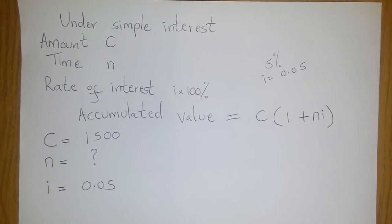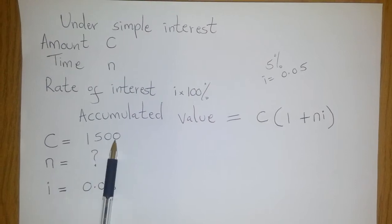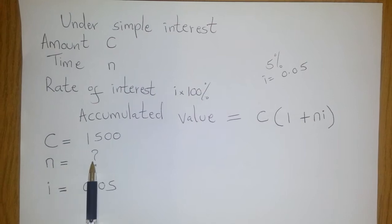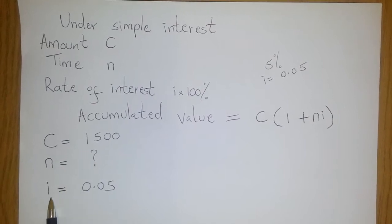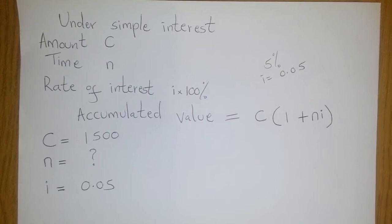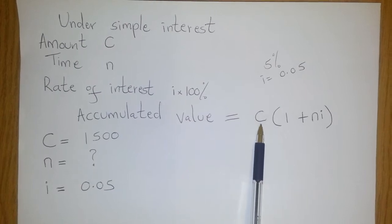In our example, our C is equal to 1500. Our n, which is the amount of time, is unknown. And our i is equal to 0.05. Now, we know that the accumulated value is given by this: C multiplied by 1 plus ni.